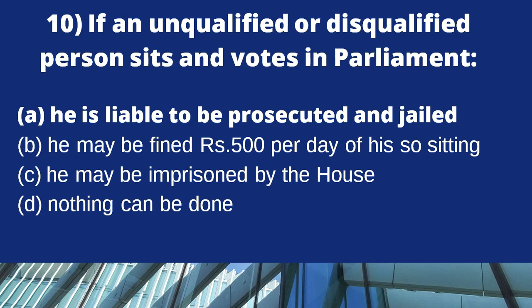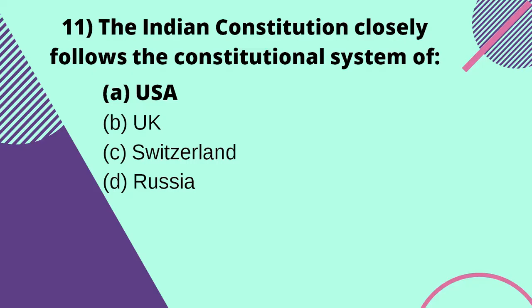If an unqualified or disqualified person sits and votes in Parliament, what happens? Option A — he is liable to be prosecuted and jailed; option B — he may be fined Rs. 500 per day of his sitting; option C — he may be imprisoned by the house; option D — nothing can be done. The right answer is option B — he may be fined Rs. 500 per day.